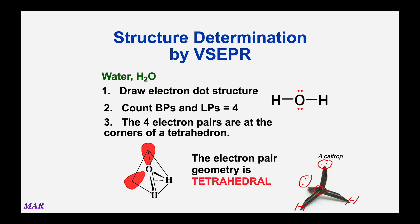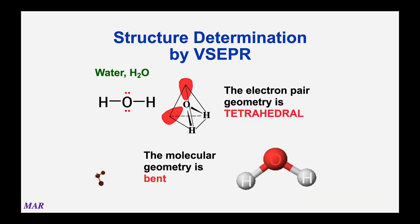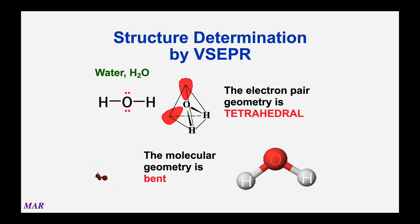EPG is tetrahedral for water. But if you realize those lone pairs are invisible because they shimmer, then the HOH molecule looks kind of like a V. The molecular geometry for this is called bent. So water is not HOH in a line — water has an angle of about 109 degrees. We refer to the electron pair geometry of water as tetrahedral, and the molecular geometry is bent.